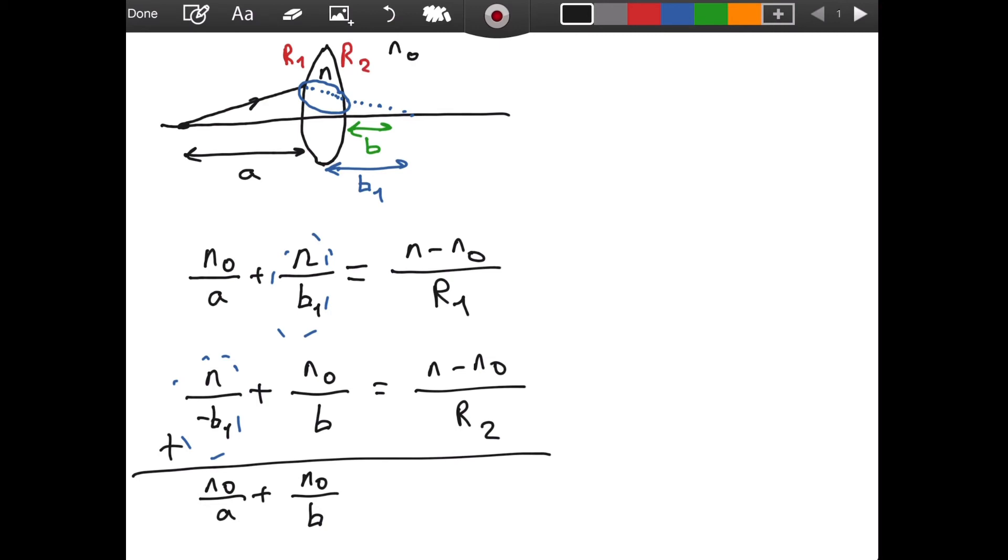we will have n minus n₀ divided by r₁ plus n minus n₀ divided by r₂. And, I can factor out n minus n₀. So, I will have (n minus n₀) times (1 over r₁ plus 1 over r₂).